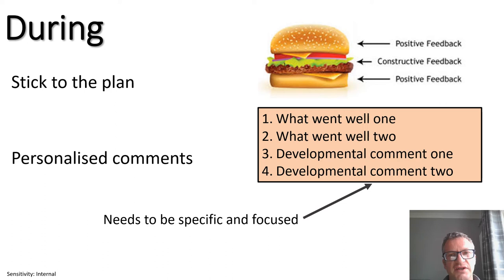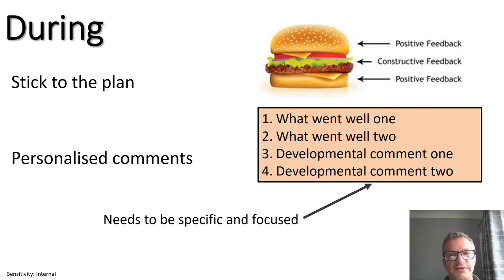An approach I recommend, which is an adaptation of the sandwich, is the one shown on screen. You start by telling the student two things they did well, or two areas where they've improved, and then include two developmental comments. In many cases there may be more than two developmental areas, so instead focus on the two main areas that, if improved, will substantially increase the quality of the work. These personalized comments should be both specific and focused, to avoid repeating information already available from the rubric or in-text comments.